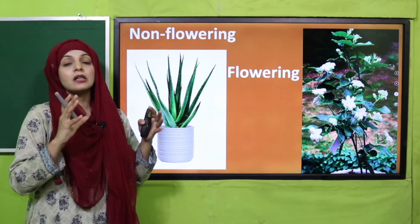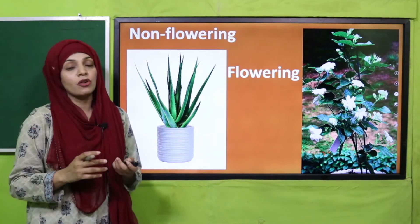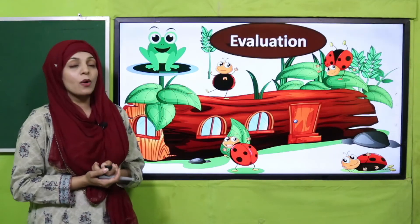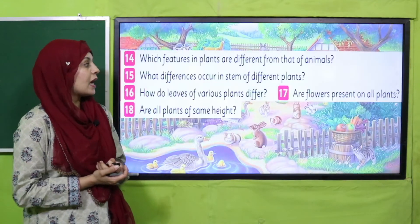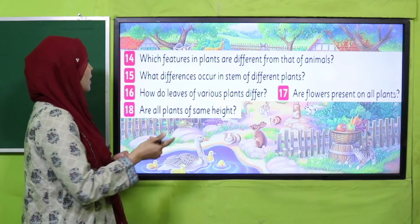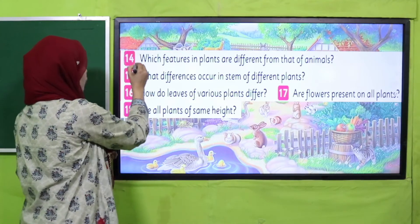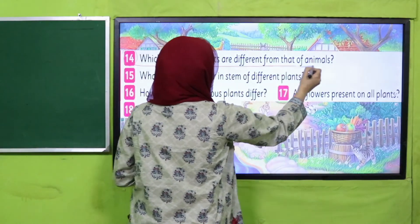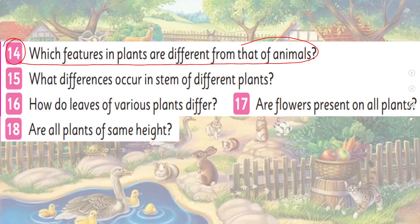Now is the time for evaluation. Quickly answer the questions carefully. Question number 14: which features of plants are different from those of animals? Plants do not move from one place to another, but animals can move from one place to another. Their body parts are also different. This is how plants and animals are different from each other.